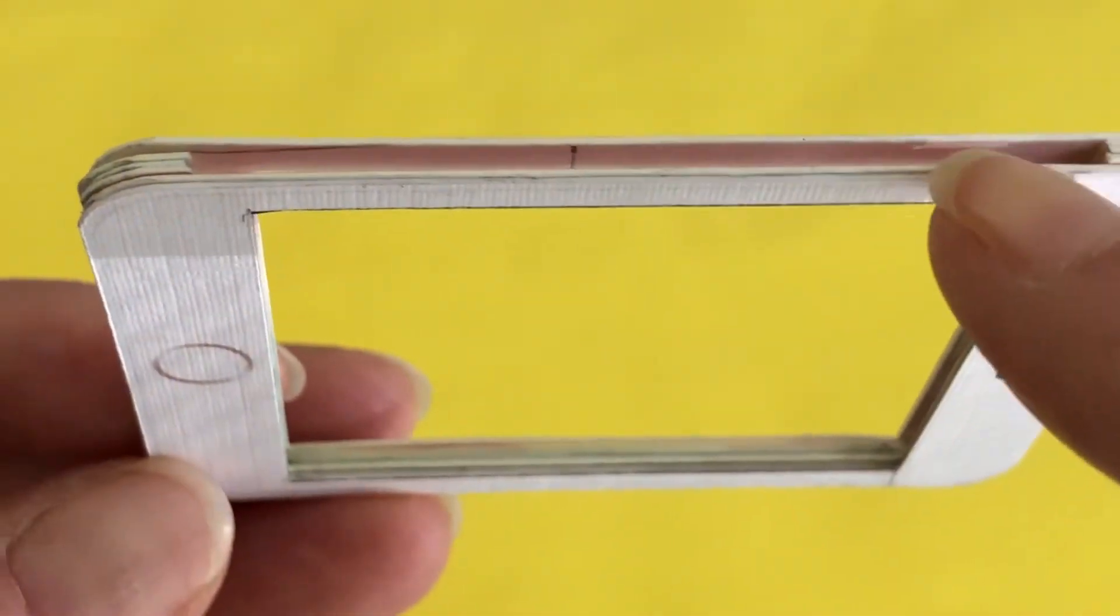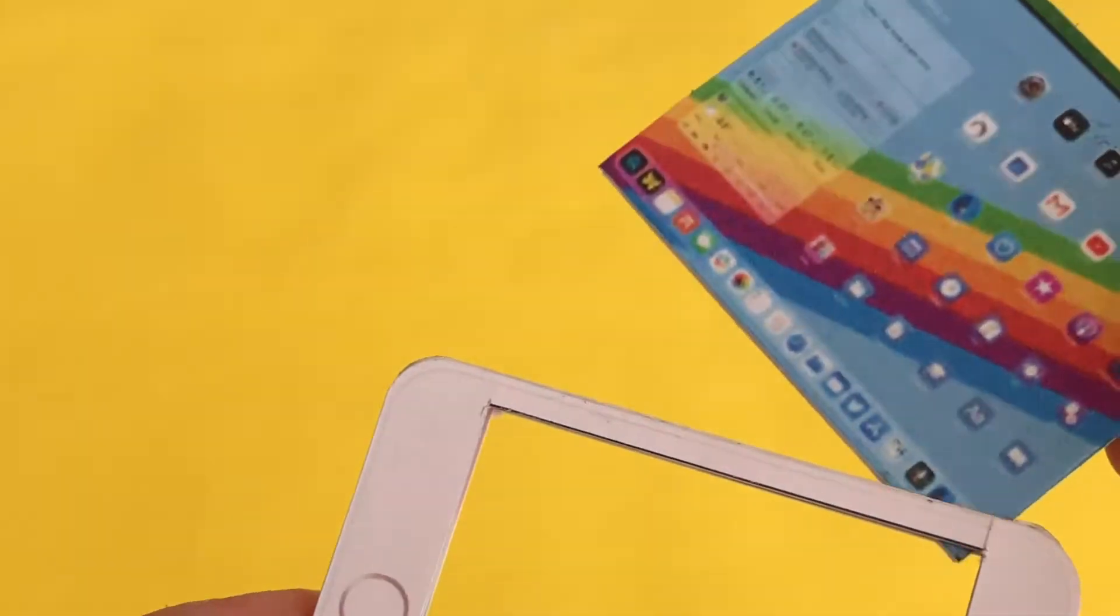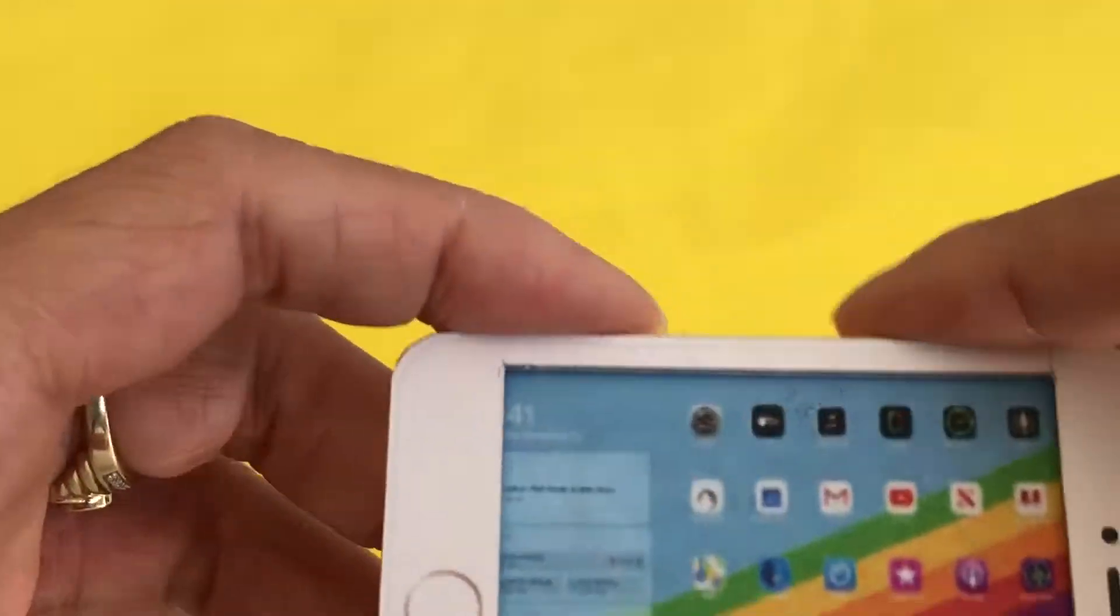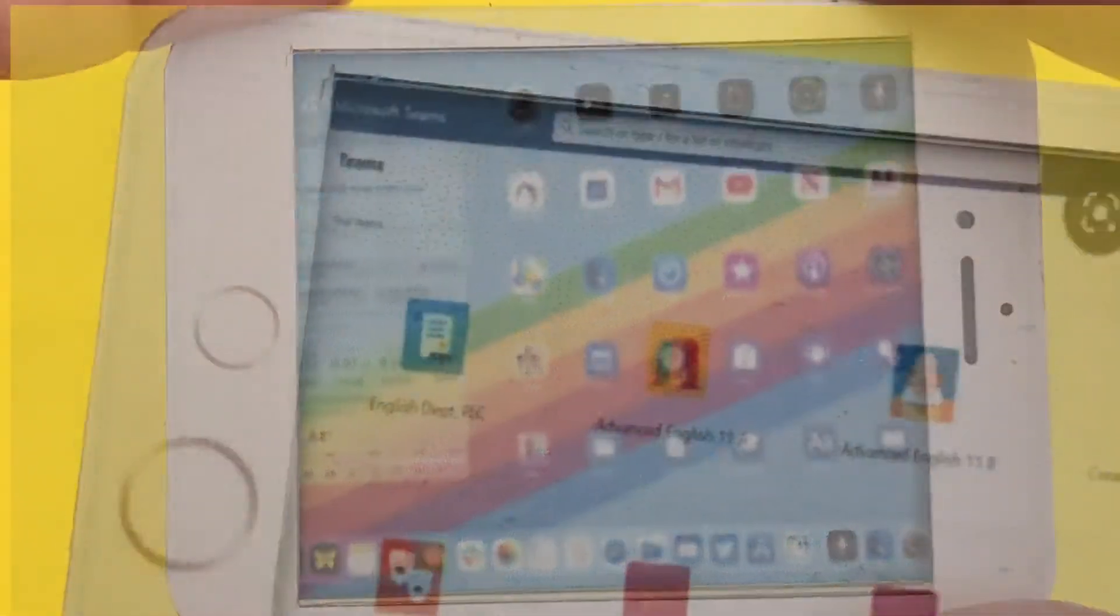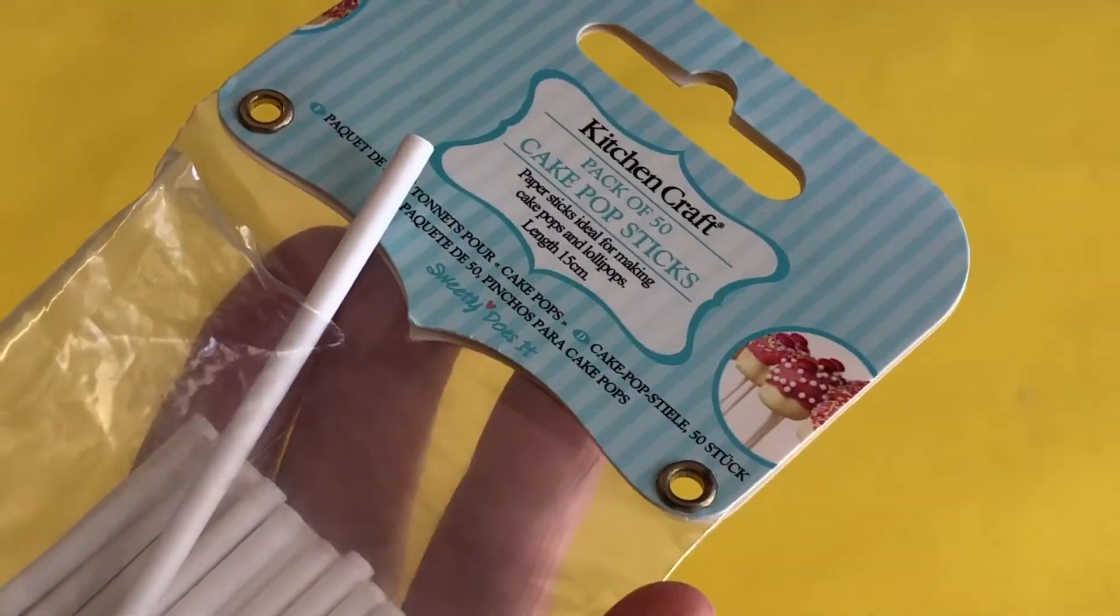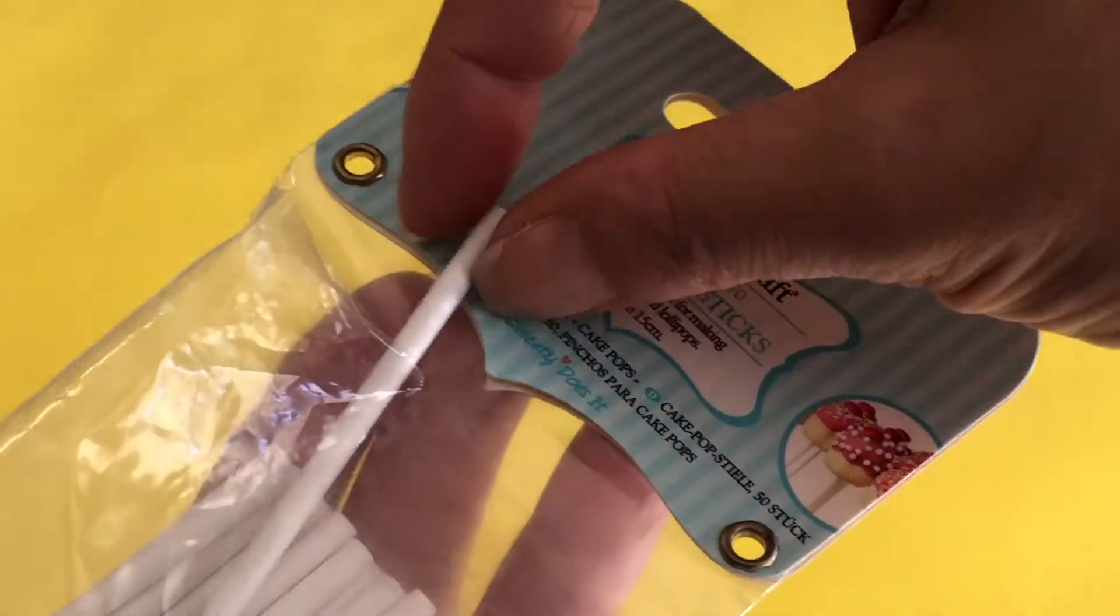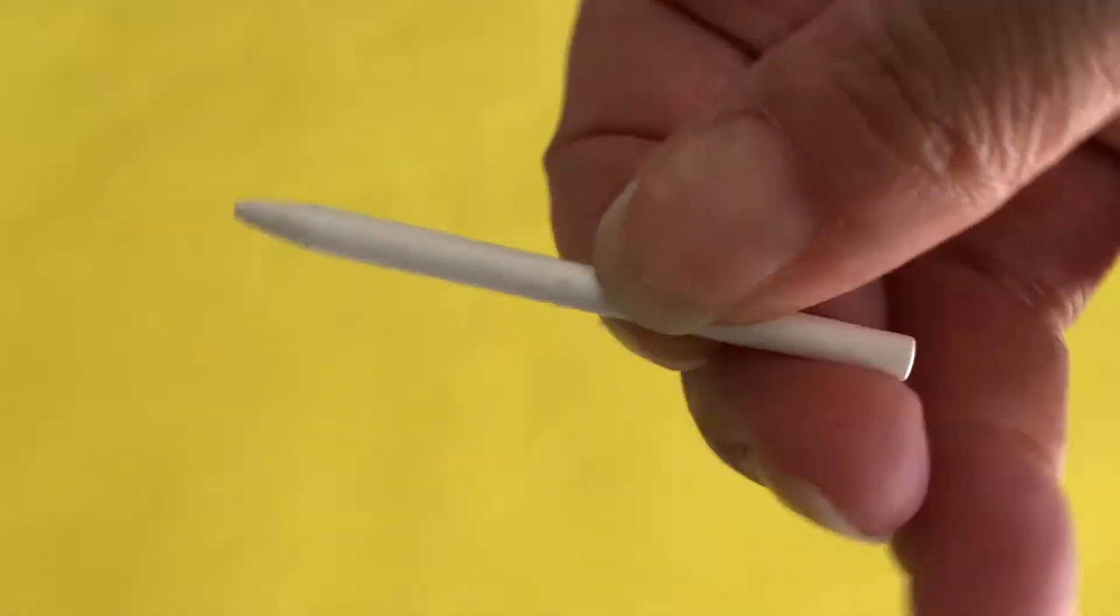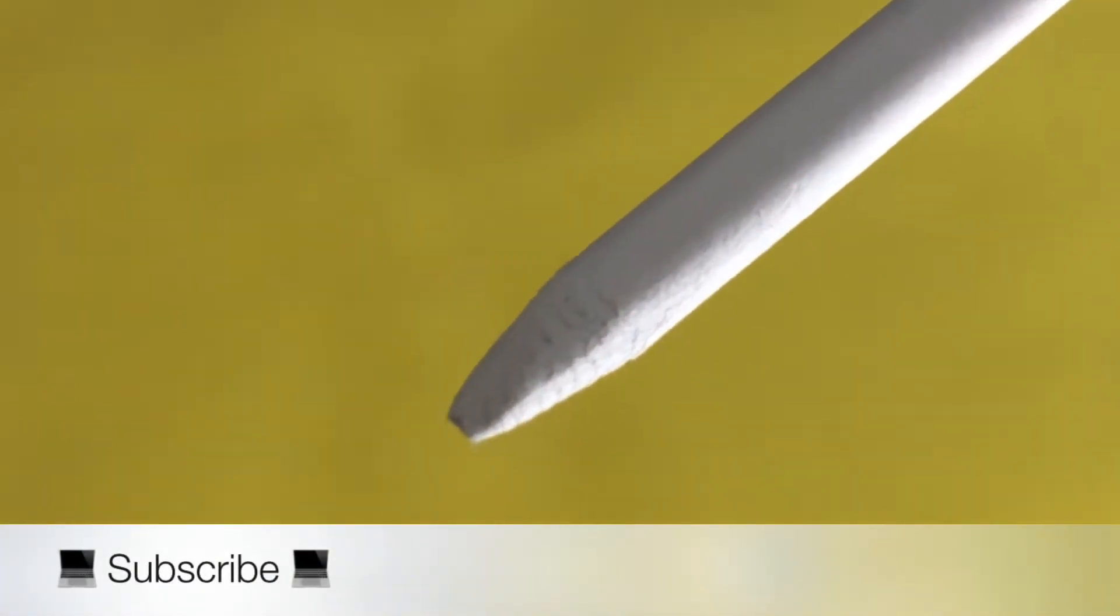For a simple stylus pen, cut a cake pop stick down to five centimeters. Using an exacto blade, shave one end to a pointed tip for the nib, then sand the edges smooth with an emery board. Click the card to see this in more detail.